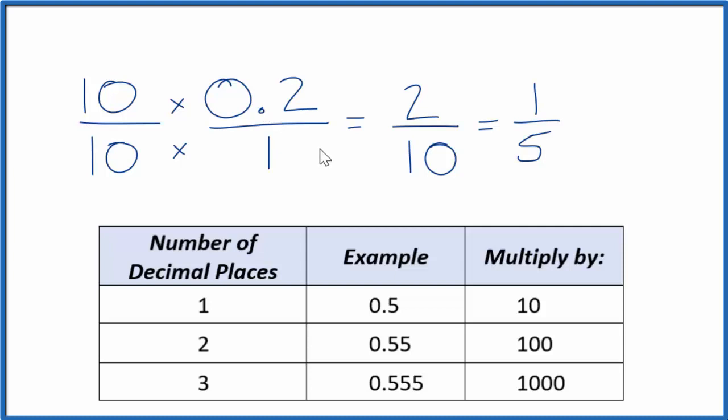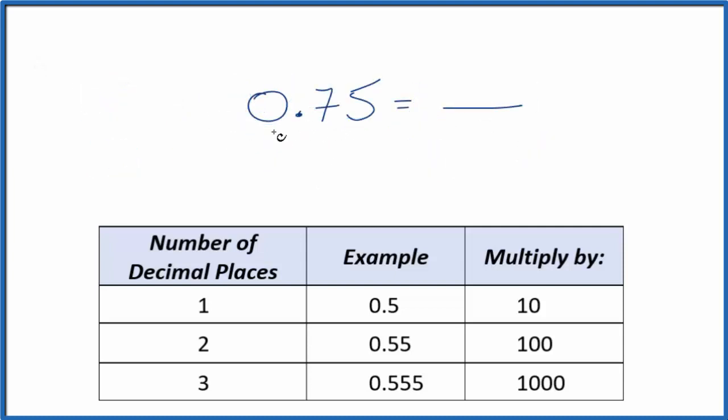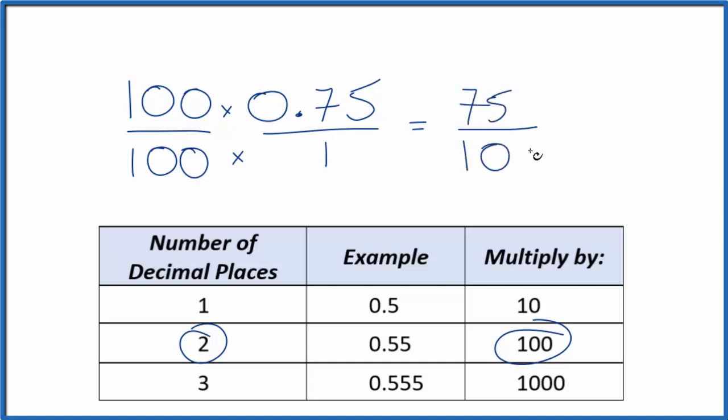Let's try a problem with 2 decimal places. So first off we'll put it over 1, and then we have 1, 2 decimal places. 2 decimal places, we're going to multiply the top and bottom by 100. 100 times 0.75, that's 75. 100 times 1 is 100. So we have a fraction. We can divide 25 into 75, it goes in 3 times. 25 goes into 100, 4 times, and we have our fraction. The decimal 0.75 is equal to 3 fourths.